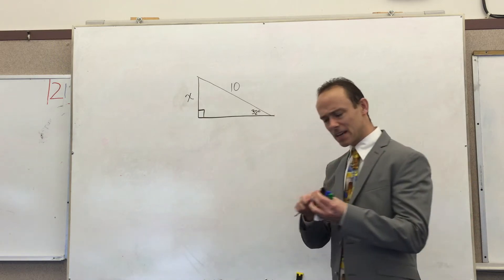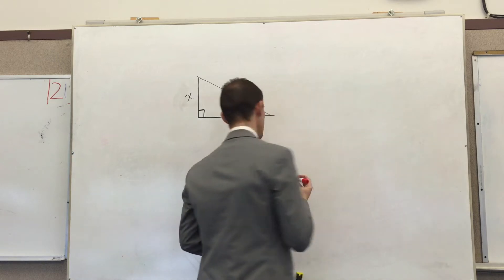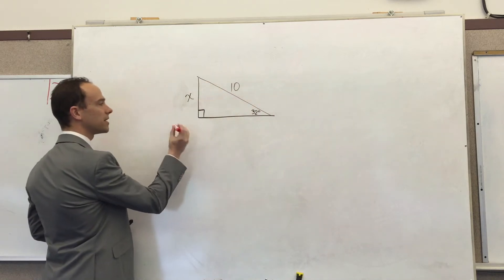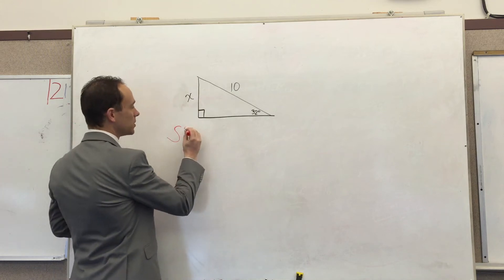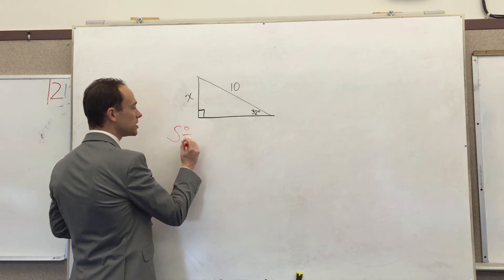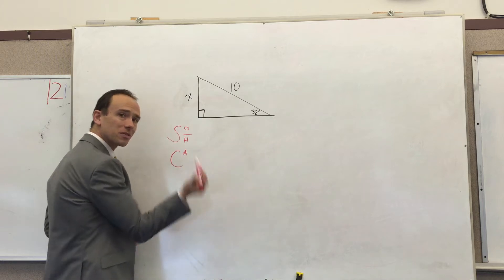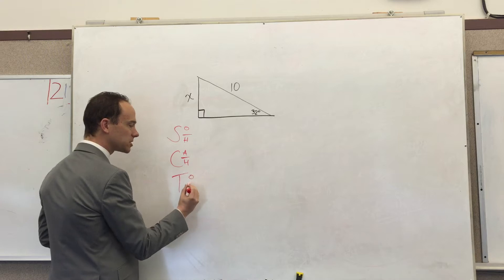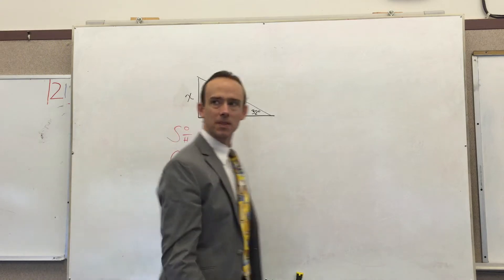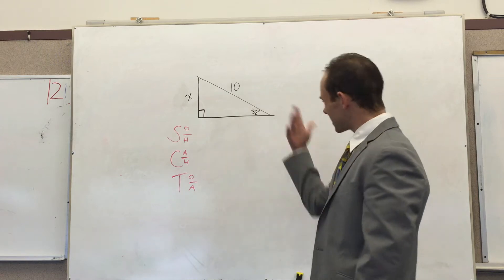So what are we going to do? We're going to use trig functions. I'm going to hit you up with a little SOH-CAH-TOA knowledge right now. We have our three trig functions: the sine, which is the ratio of the opposite to the hypotenuse; the cosine, which is the ratio of the adjacent to the hypotenuse; and the tangent, which is the ratio of the opposite to the adjacent.